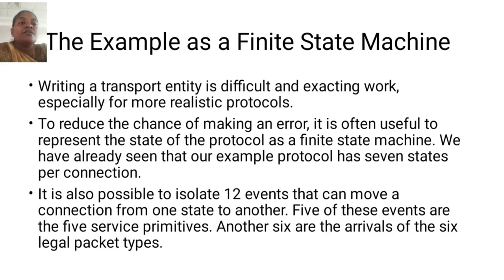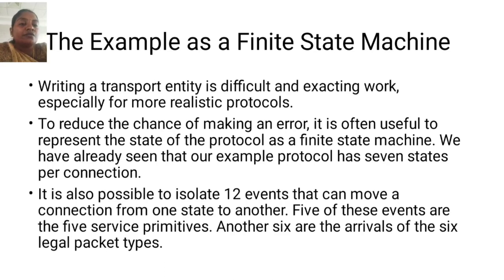The finite state machine represents the protocol state. Writing a transport entity is difficult and exacting work, especially for more realistic protocols. To reduce the chance of making an error, it is often useful to represent the state of the protocol as a finite state machine. It is also possible to isolate 12 events that can move a connection from one state to another — 5 of these events are the 5 service primitives, and another 6 are the arrivals of the 6 legal packet types.